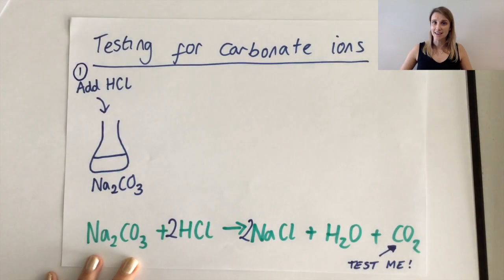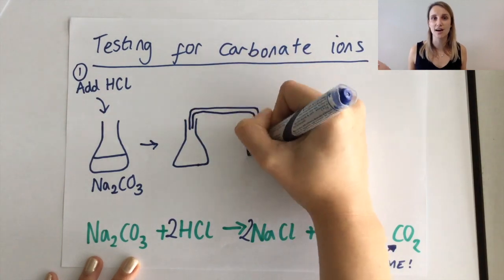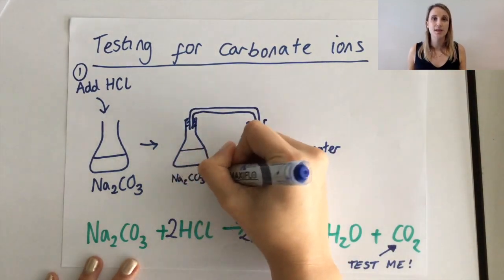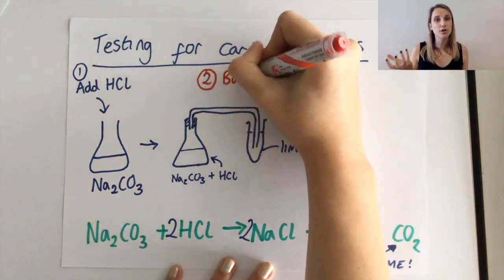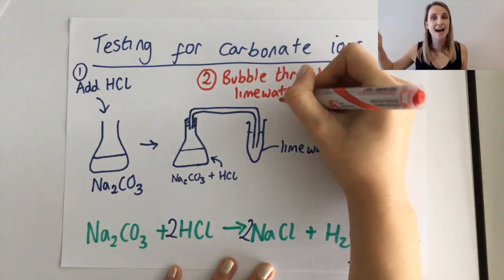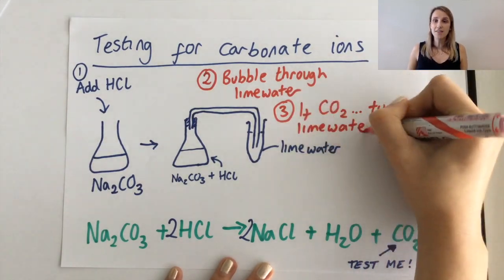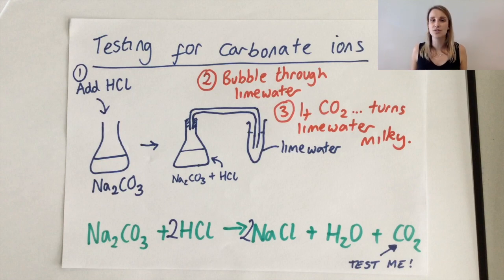The key to this is that you can test for the carbon dioxide to prove that the carbonate was there at the beginning. So if I take my conical flask and I bubble the gas through lime water, if that lime water turns milky that tells me that carbon dioxide is present and so therefore there was carbonate at the beginning.